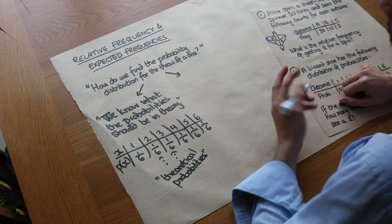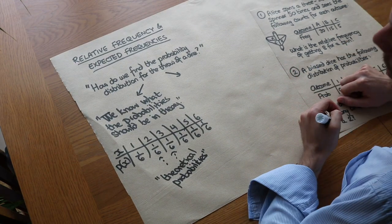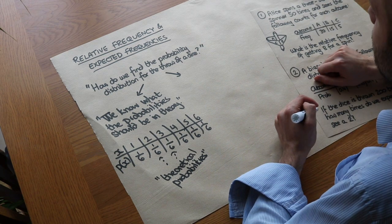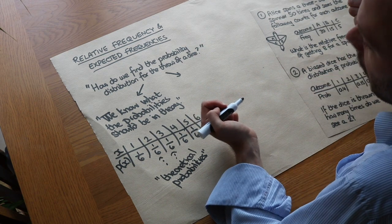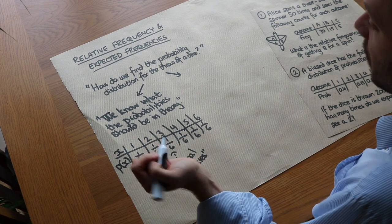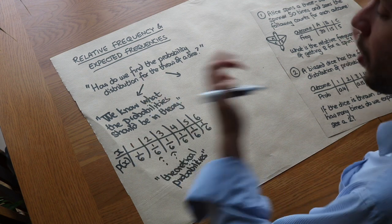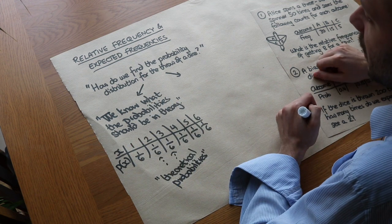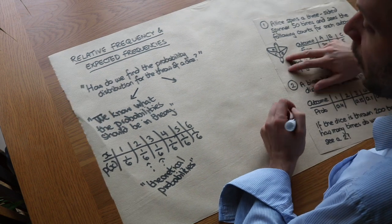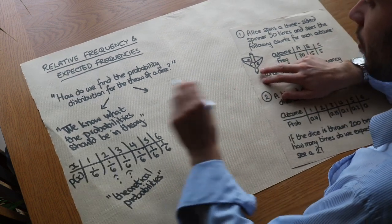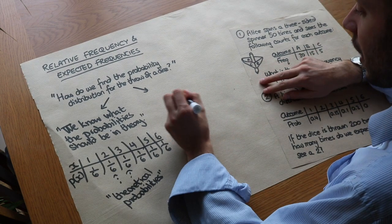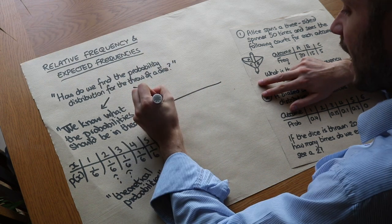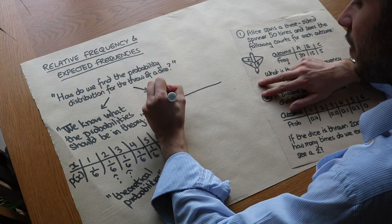But it might be that we weren't told it's a fair dice — we don't know about the dice. Someone's just given us the dice and it could be a biased dice, it could be a fair dice, we don't know. So what would we do to estimate the probability of each outcome? Well, what we could do is throw the dice a number of times and then count the number of each outcome.